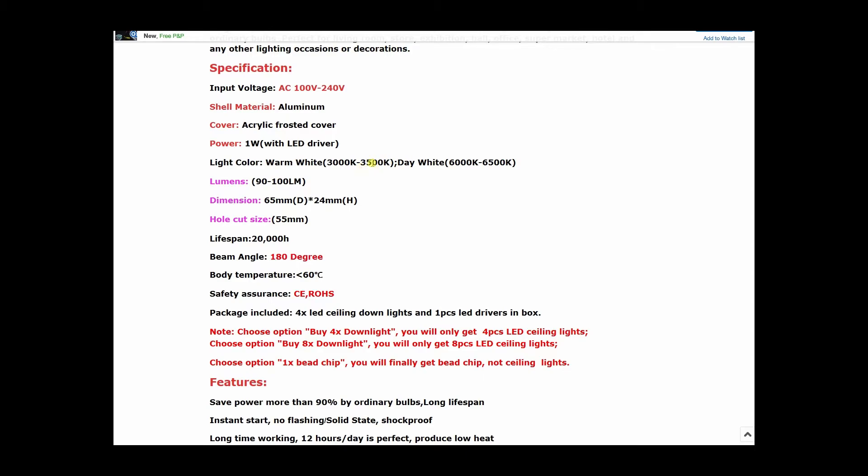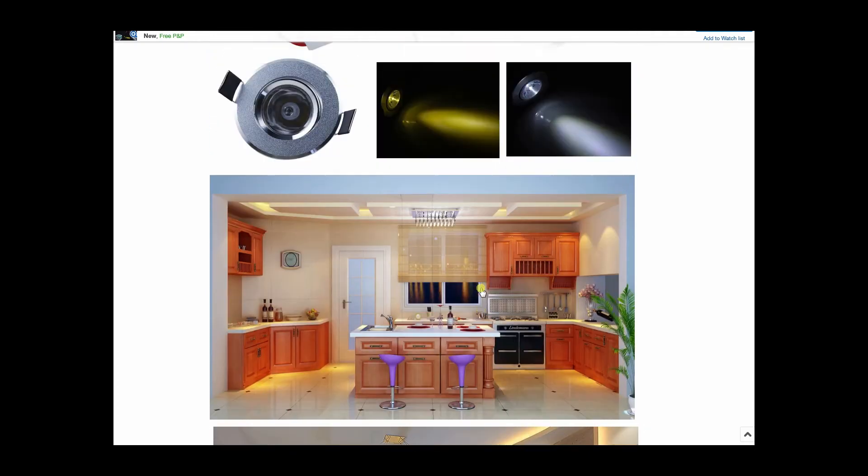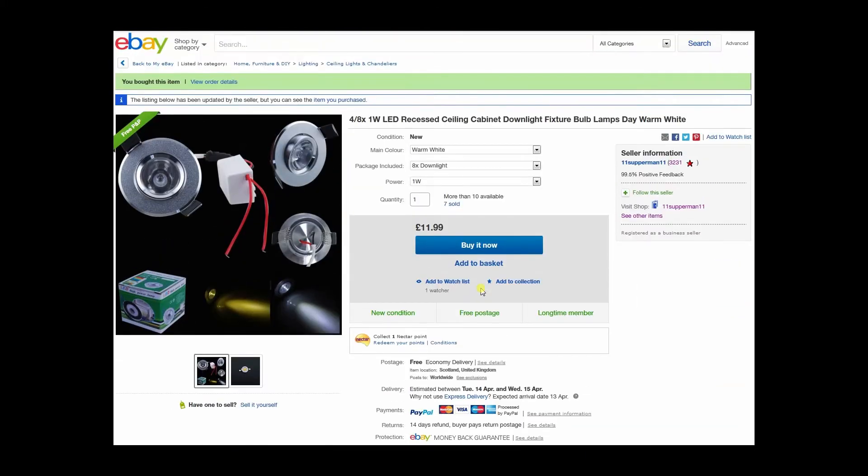It says 1 watt, warm white between 3000 and 3500 Kelvin, but it looks quite a bit warmer than that. Lumens 90 to 100 lumens, I wouldn't say it's quite that high. The beam angle is definitely nowhere near 180 degrees, it was close to probably 30 degrees, so that's way off. They do sell all kinds of other lights. It was quite a good price for what I wanted. I'm going to likely hack the LED unit up quite heavily. I really just wanted the case and the lens, so I was happy to pay 12 pounds for eight of those.